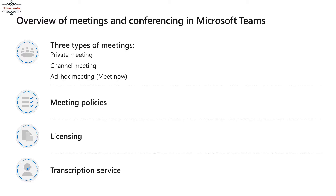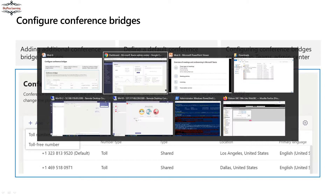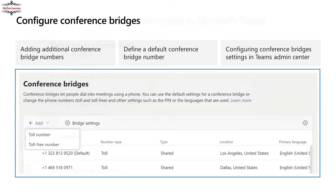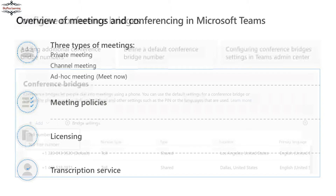The third type is ad hoc meetings. In ad hoc meetings you can start a meeting as per your convenience — just click the 'Meet Now' button in the calendar. Let me quickly jump into the client. You can see there's a 'Meet' button, and clicking 'Meet Now' will start a quick, immediate meeting or conferencing session. This is the ad hoc type of meeting.